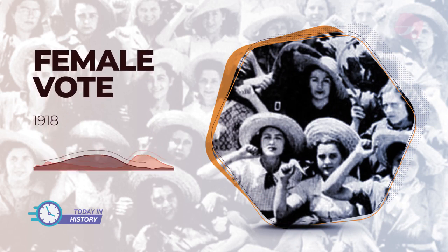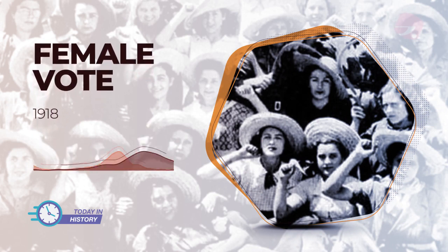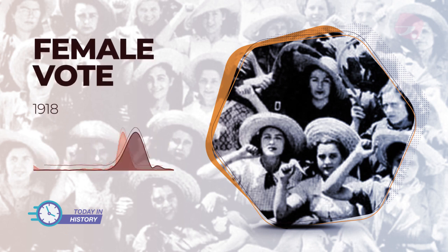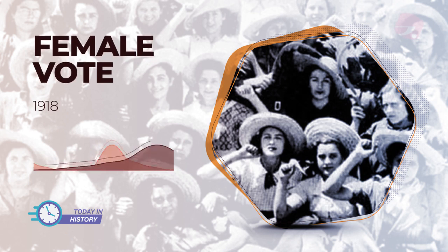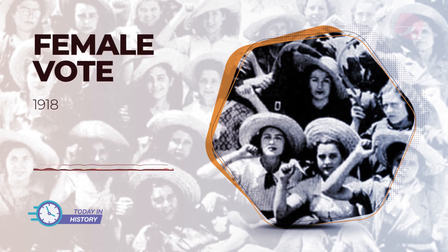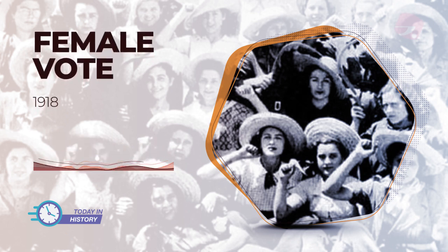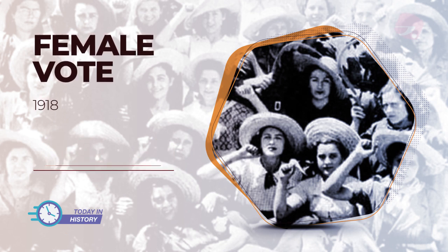In 1791, within the framework of the French Revolution, which had broken out in 1789, the writer Olympe de Gouges drafted, as a complement to the Declaration of the Rights of Man and the Citizen, the Declaration of the Rights of Women and the Citizen.